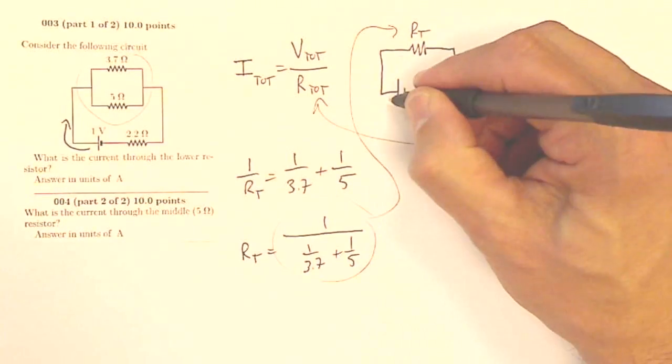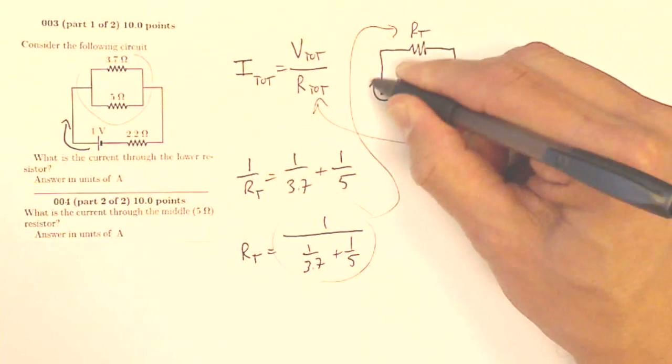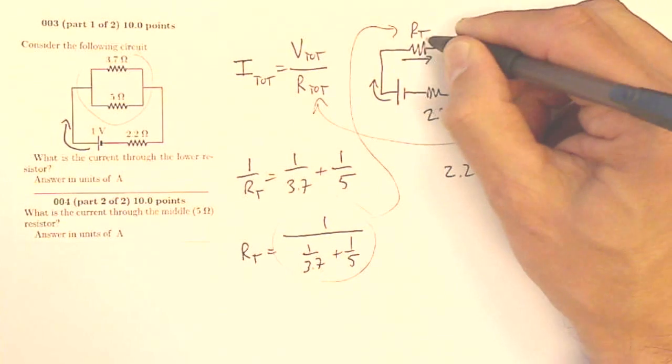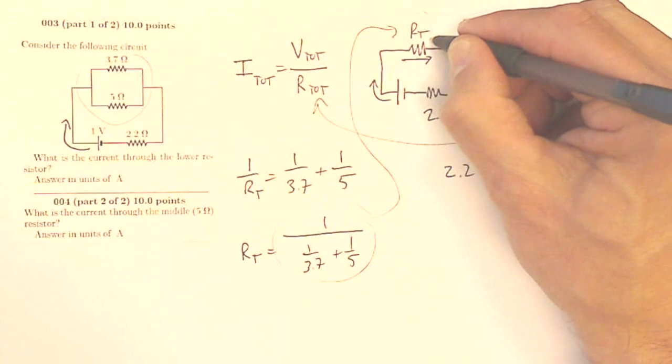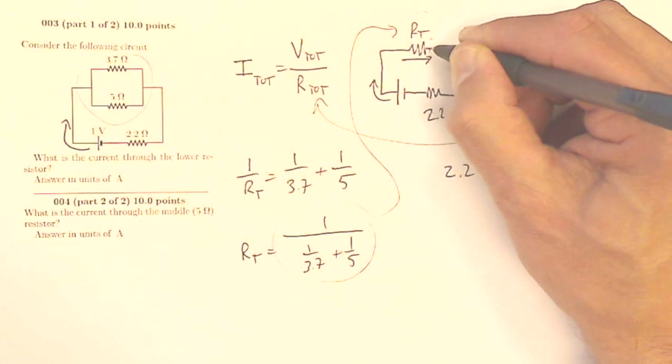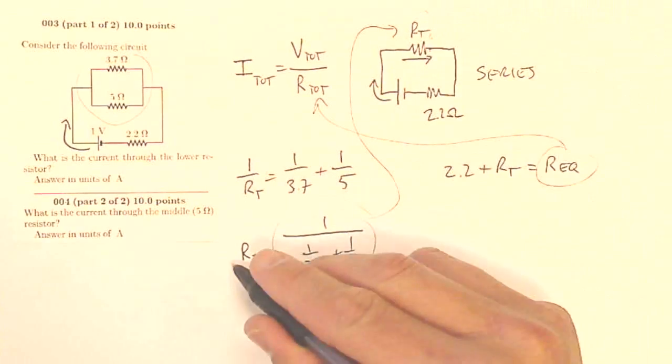what I'm going to do there is I now know the current that leaves the battery. All of that current would flow through, because that's this one as well. That current leaving the battery is all going to flow through this resistor, this equivalent resistor.